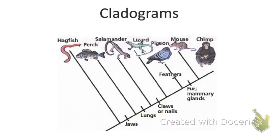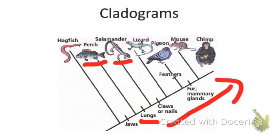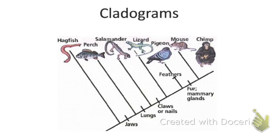Let's take the perch and the salamander. What is the difference between them? That is lungs. Your perch has gills; your salamander has lungs. Not only does a salamander have lungs, but so does a lizard, a pigeon, a mouse, and a chimp, because they all come after that point. What determines the difference between a salamander and a lizard? Claws or nails. Salamanders do not have claws or nails, but lizards do — and so do pigeons, mice, and chimps.